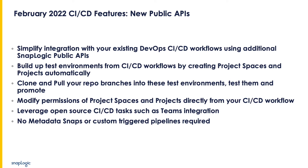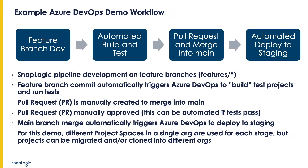Now let's talk about the details of the demo. We're going to show this in Azure DevOps. We're going to be doing SnapLogic pipeline development on feature branches. When you do the feature branch commit, it will automatically trigger Azure DevOps to build the test project and run the tests.